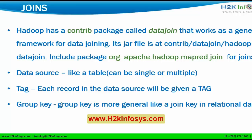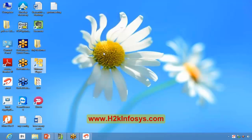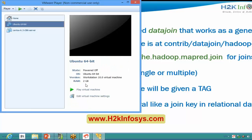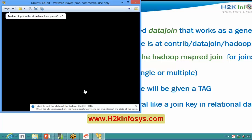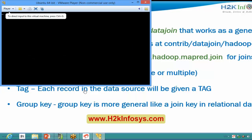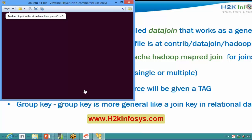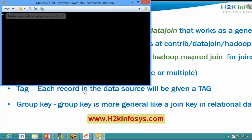Still, the same functionality can be done in MapReduce as well — but MapReduce is not the first choice in the Hadoop ecosystem for joins. In order to perform joins in MapReduce, Hadoop has a contrib package called 'data join' that works as a generic framework for data joining. To write any join program, you need to add the library org.apache.hadoop.mapred.join, and it requires a separate jar file contained in the contrib library.